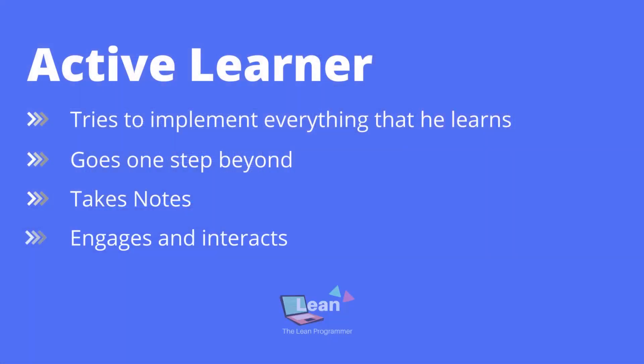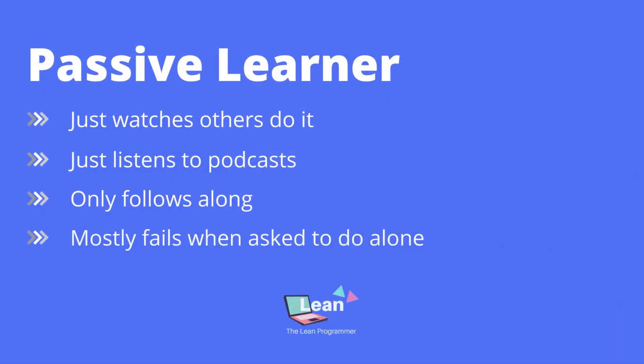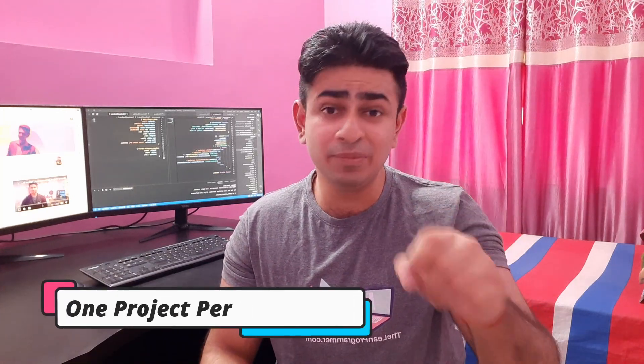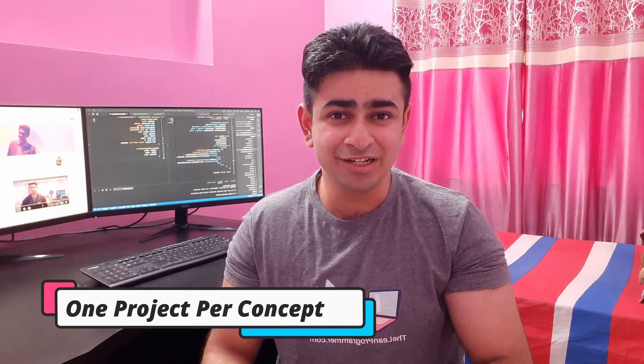Do you know the difference between an active learner and a passive learner? An active learner is someone who tries to implement everything that he learns and tries to go one step beyond what he or she is taught. Whereas a passive learner is someone who just listens to podcasts and watches YouTube videos and thinks they know everything, but when it comes to actual implementation, a passive learner is going to fail.